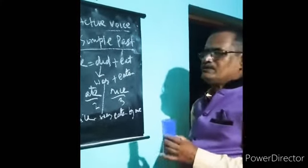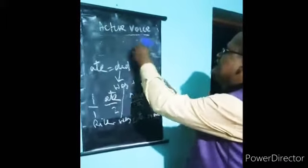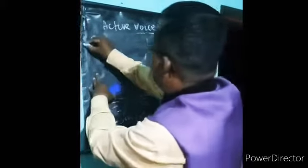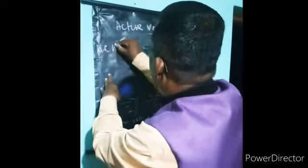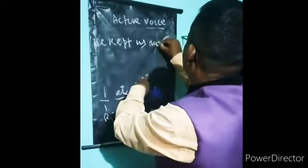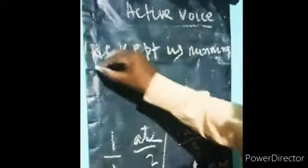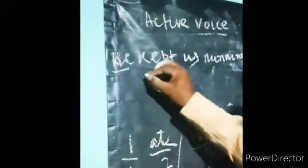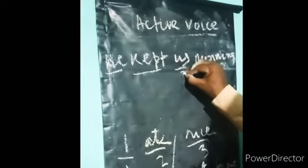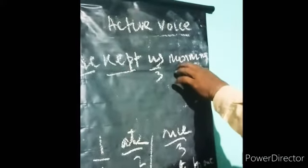So you have to remember, ate becomes was. Another sentence I can write here. He kept us running. One subject, two verb phrase, three your object. You don't have any concern with this last one that is running.